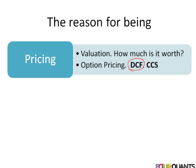While DCF is one end, on the other end — a much more interesting end — is the option pricing relationship, where we use the Black-Scholes equations to determine how much a financial security is worth when the cash flows are uncertain.